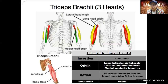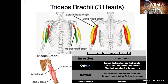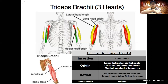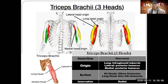Also note the nerve supply: anything posterior is going to be the radial nerve. So the entire posterior aspect of the brachium and antibrachium is the radial nerve.